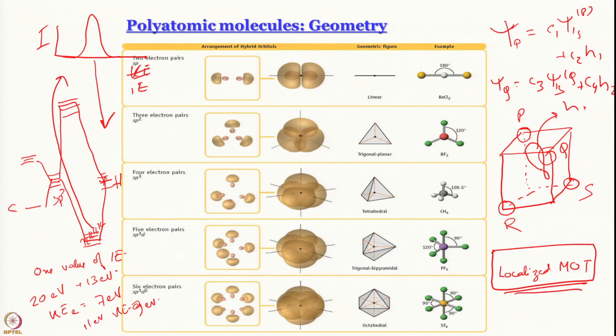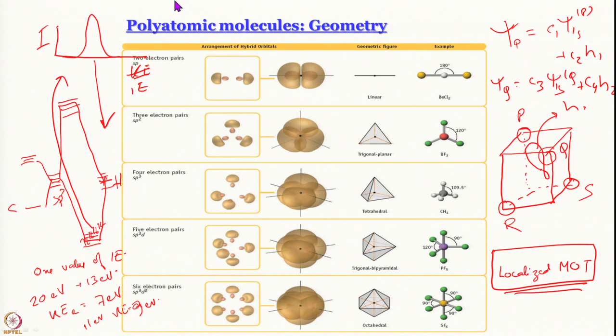However, using hybrid orbitals gives up the biggest advantage of MOT: delocalization. So what we will do is talk about delocalized MOT. Please remember this discussion — if I use localized molecular orbital theory I get one value of ionization energy, one band in the photoelectron spectrum. That being said, let us go ahead and discuss the delocalized molecular orbital theory picture. I want delocalization, so I will not use hybrid orbitals.